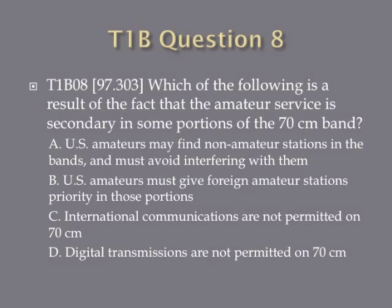Question 8. Which of the following is a result of the fact that the amateur service is secondary in some portions of the 70-centimeter band? A. U.S. amateurs may find non-amateur stations in the bands and must avoid interfering with them. B. U.S. amateurs must give foreign amateur stations priority in those portions. C. International communications are not permitted on 70 centimeters. Or D. Digital transmissions are not permitted on 70 centimeters.